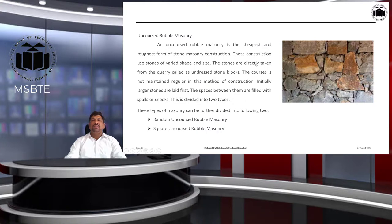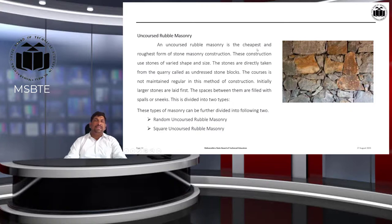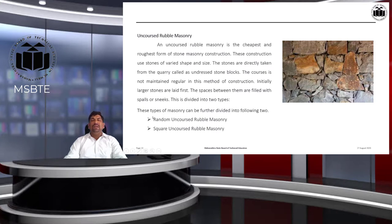Uncoursed rubble masonry, as the name suggests, has no regular courses — stones are placed randomly, with small stones filling the gaps between large stones. It is the cheapest and roughest form of stone masonry. Stones of varied shape and size are taken directly from the quarry as undressed blocks. Larger stones are laid first, and spaces between them are filled with spalls or snakes. This type is further divided into random uncoursed rubble masonry and square uncoursed rubble masonry.